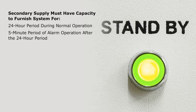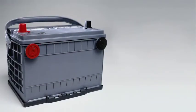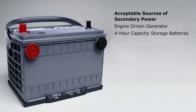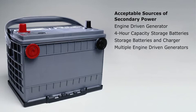This is also known as 24-5 capacity. Some acceptable sources of secondary power would include engine-driven generator and 4-hour capacity storage batteries, storage batteries and charger, and multiple engine-driven generators, one of which can be equipped with automatic start.